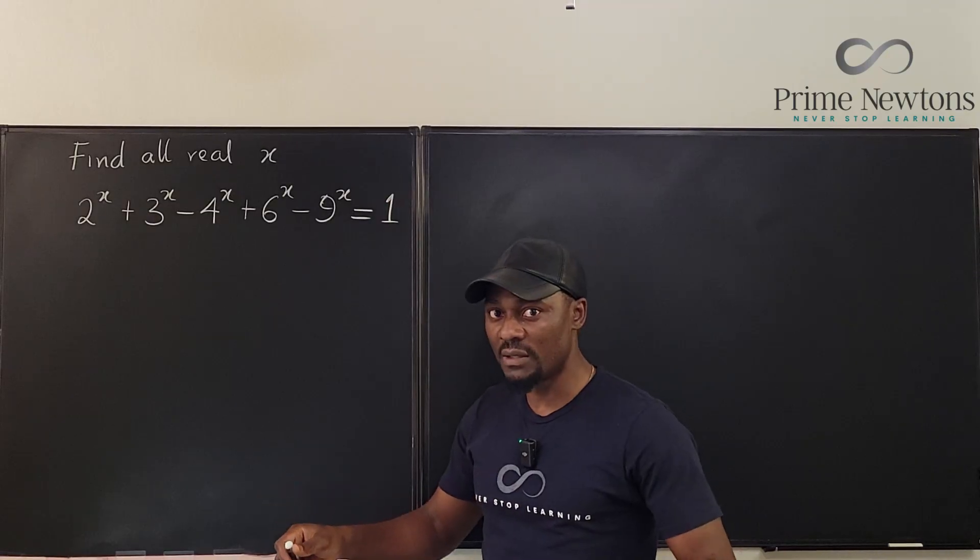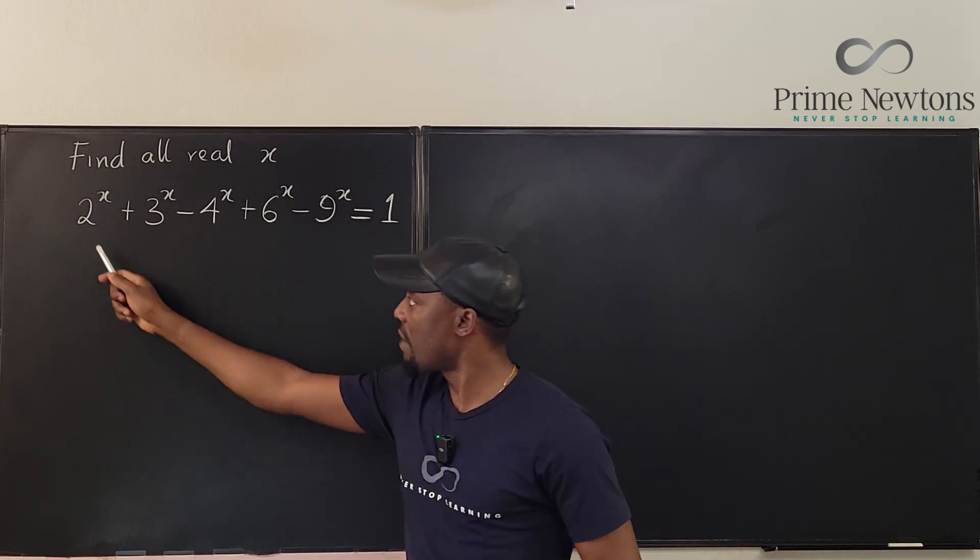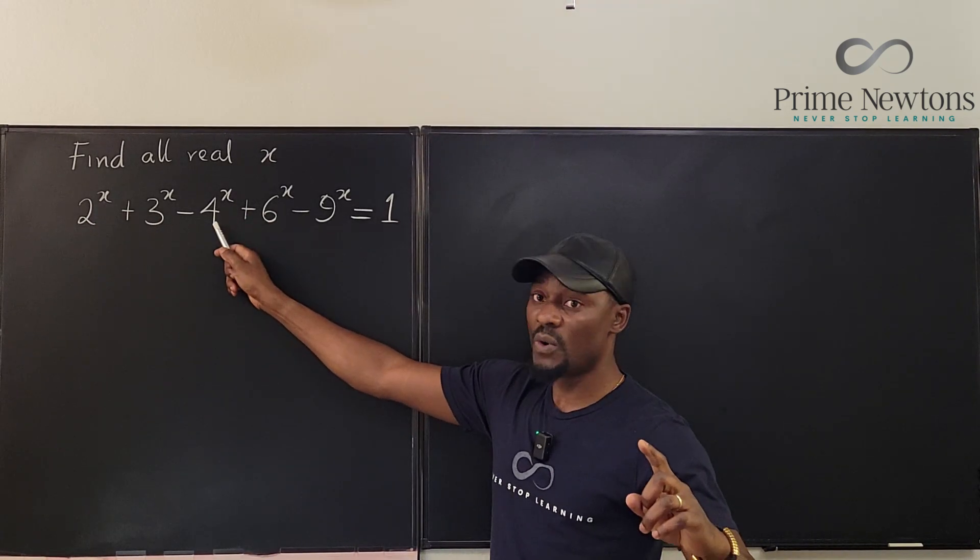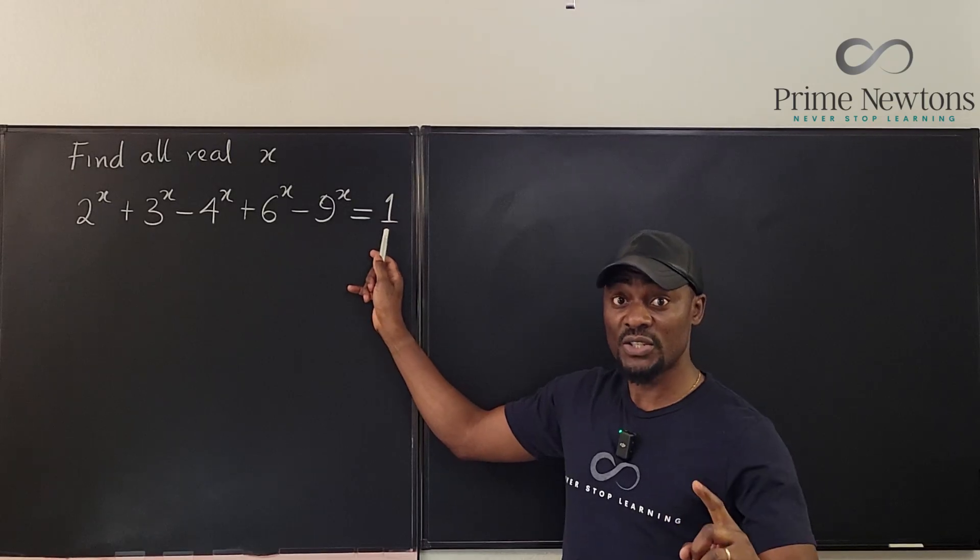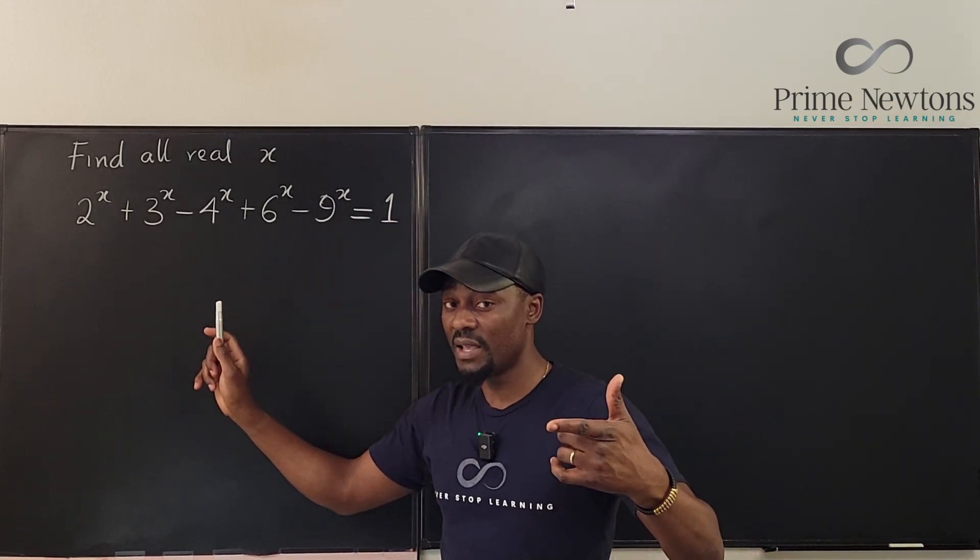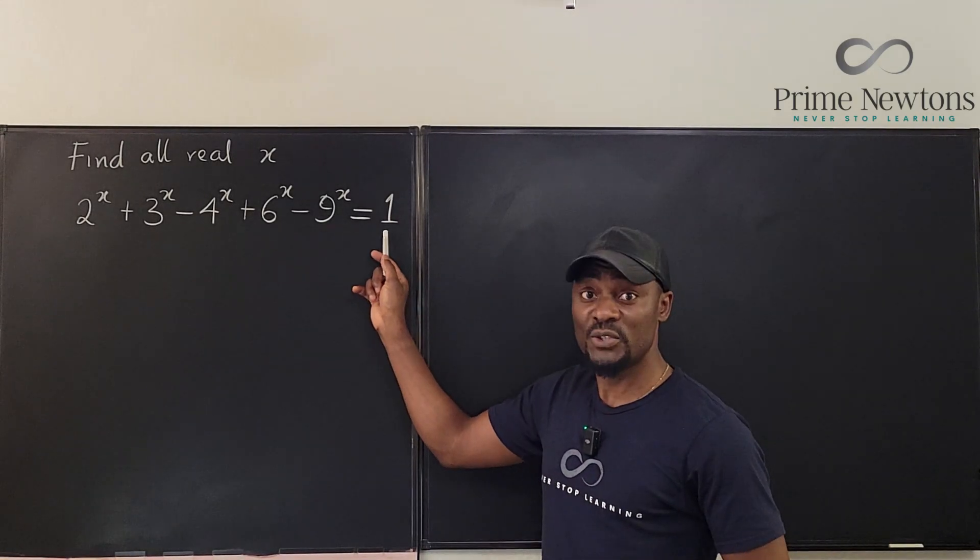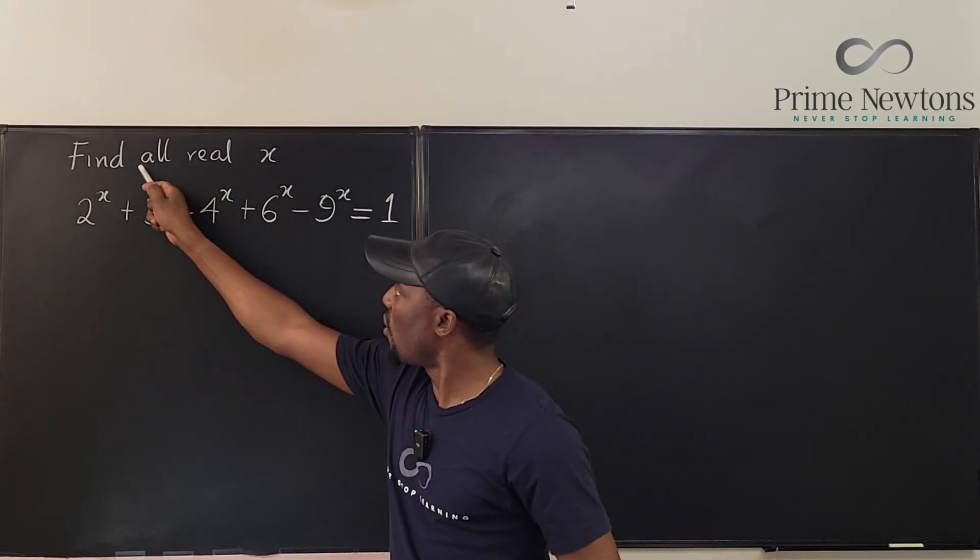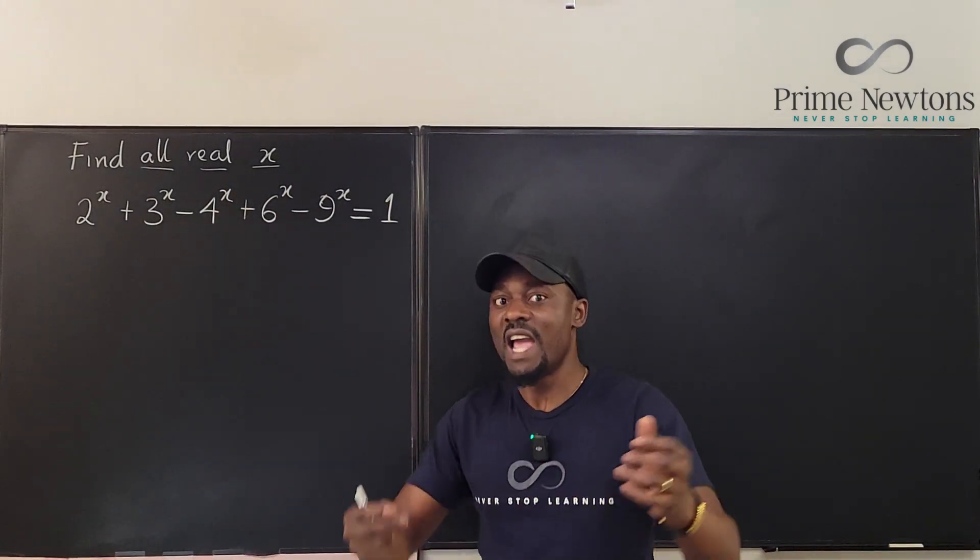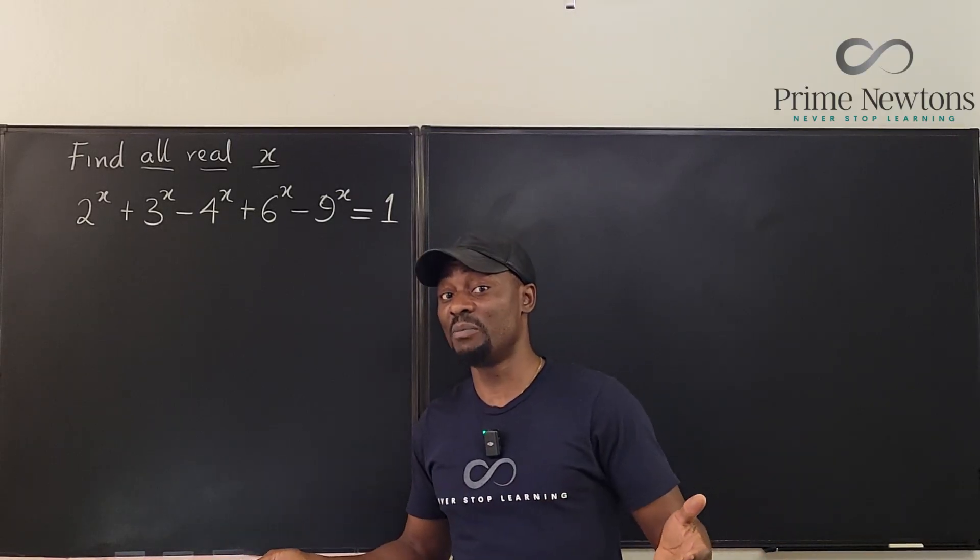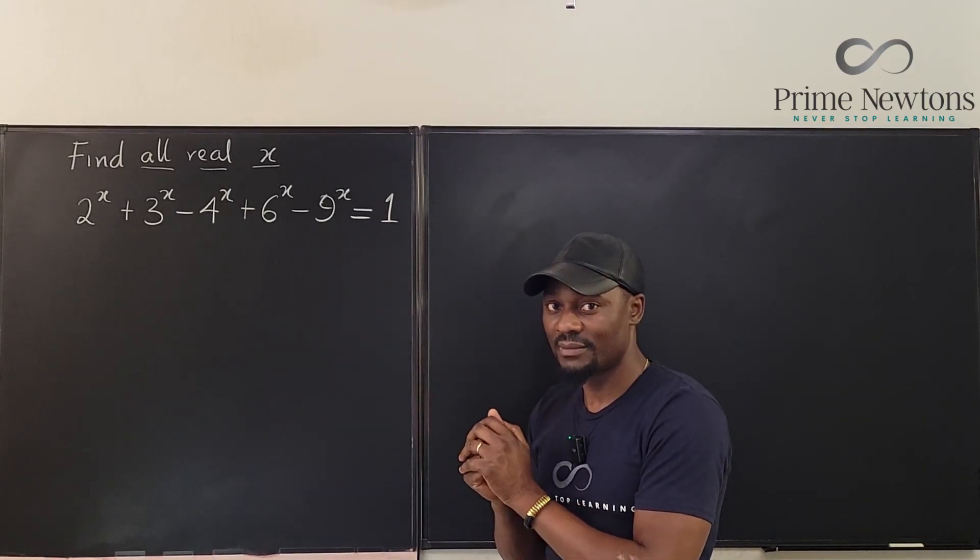What about x = 1? If I plug in 1, I get 2 + 3 - 4 + 6 - 9. That's 5 - 4 = 1, plus 6 is 7, minus 9 is -2, but this is not -2, so one does not work. You might try 2 or negative 1, but the problem is asking for all real x, so it's possible the answer is not an integer you can easily plug in. There has to be a way to find all possible solutions.